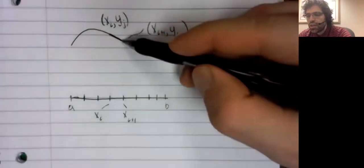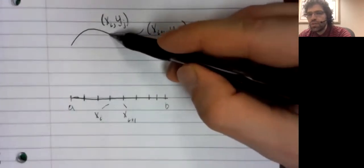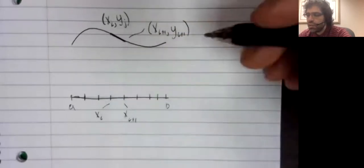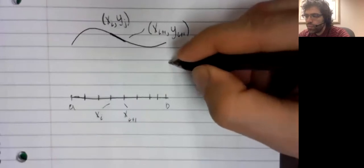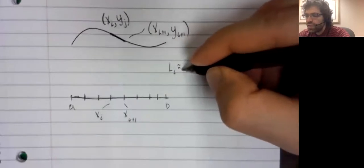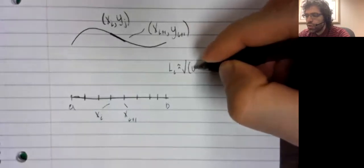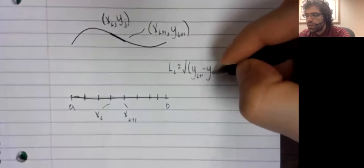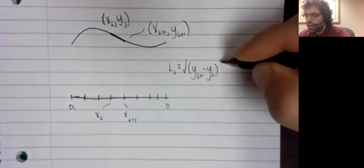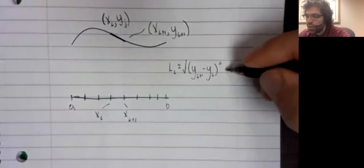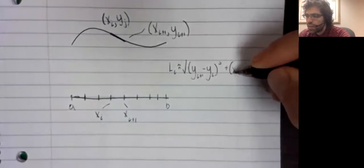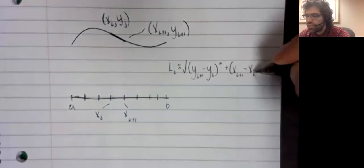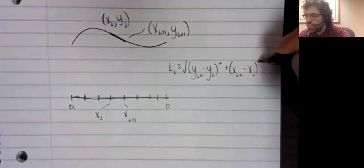And the length of this line segment, and thus our approximation on this little sub-interval, is the square root of y sub i plus one minus y sub i squared plus x sub i plus one minus x sub i squared.